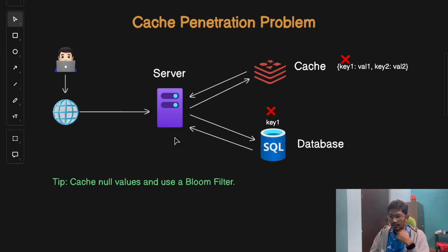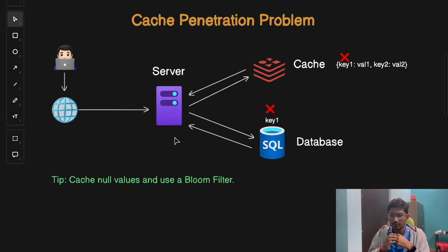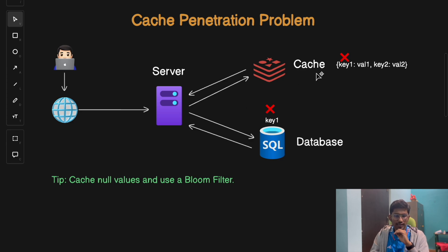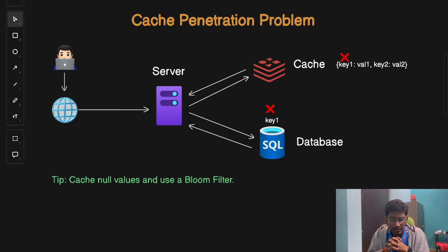The next problem is the Cache Penetration problem. This happens when a key does not exist in the cache or even in the database — the key is missing in both places. Your application will keep querying both the cache and database simultaneously for data that isn't present in either, putting unnecessary pressure on both servers.